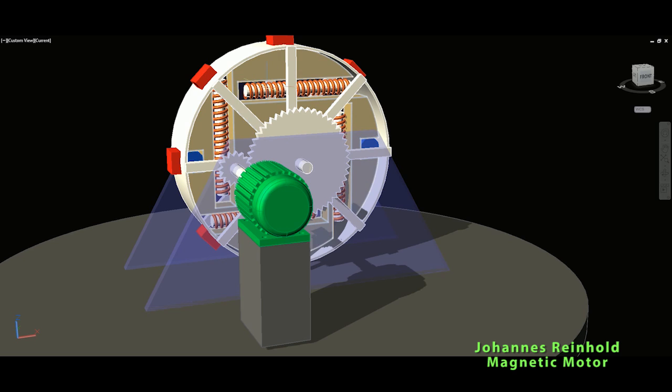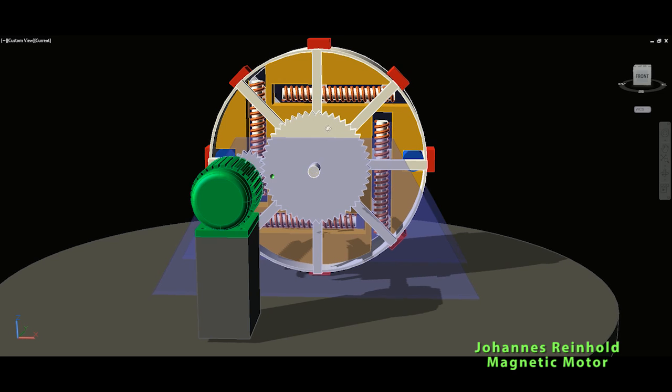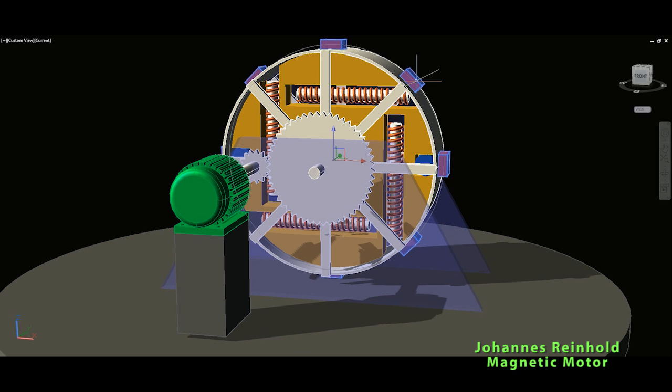On these windings we will lead the current. What we will do with that is create an electromagnet, and this electromagnet will repel itself from permanent magnets, this red part on the outside of this circle.